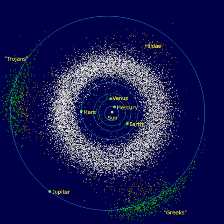Mercury-crosser asteroids have a perihelion smaller than Mercury's 0.3075 AU. Venus-crosser asteroids have a perihelion smaller than Venus's 0.7184 AU; this group includes the above Mercury-crossers if their aphelion is greater than Venus's perihelion, and all known Mercury-crossers satisfy this condition. Earth-crosser asteroids have a perihelion smaller than Earth's 0.9833 AU; this group includes the above Mercury and Venus-crossers, apart from the Apaheles.